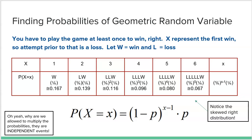Continuing the pattern: the fourth trial would be (5/6)³ × (1/6), three losses then a win. The fifth would be (5/6)⁴ × (1/6), and the sixth would be (5/6)⁵ × (1/6). The pattern goes on forever — it never really ends. We're allowed to multiply these probabilities because the rolls are independent events.